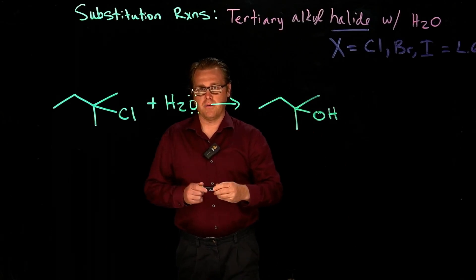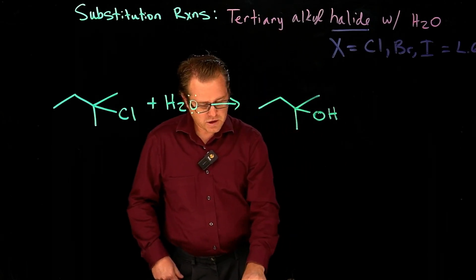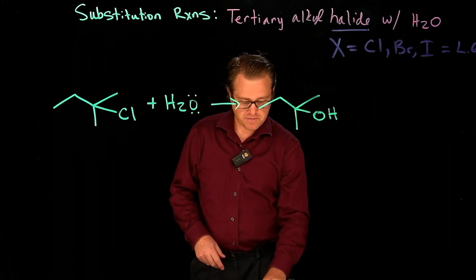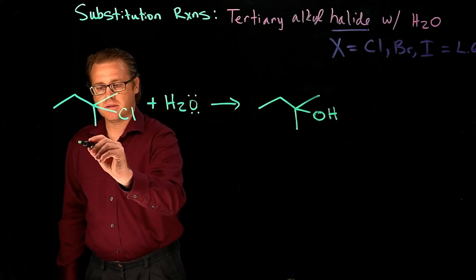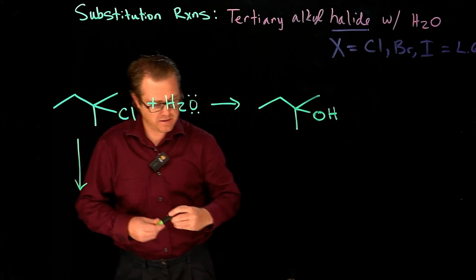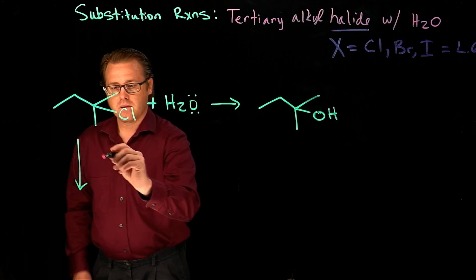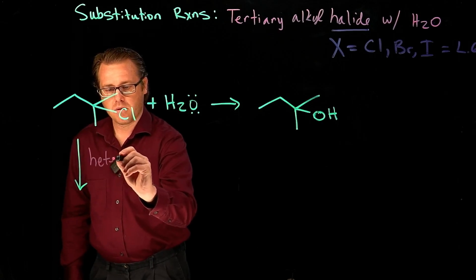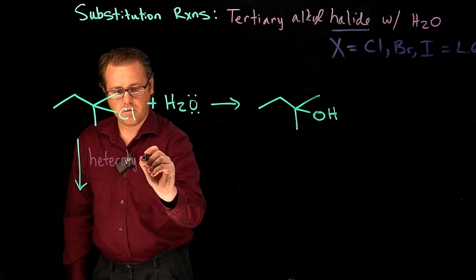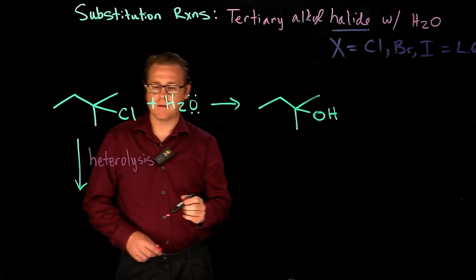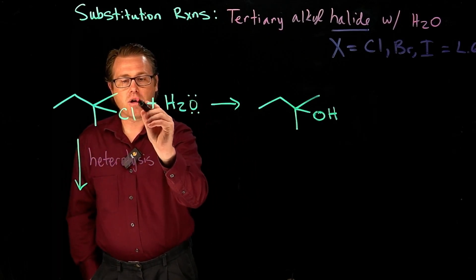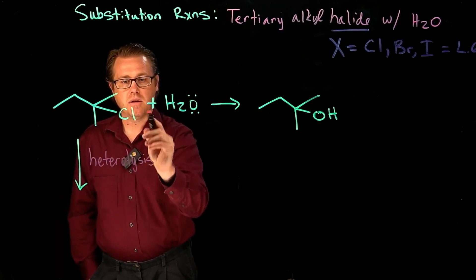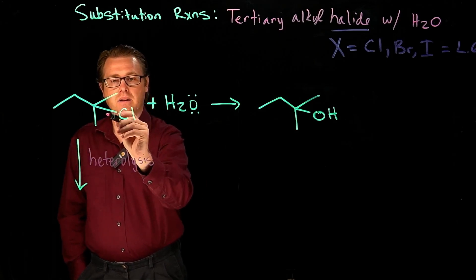So how does this occur? The first thing that happens is a heterolysis step, so we have a heterolysis step in which our leaving group, which is the alkyl halide, leaves.